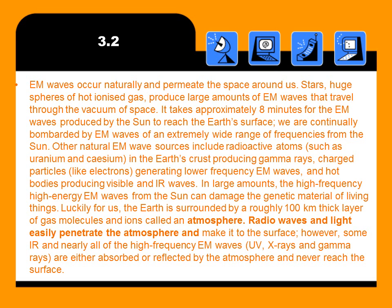The previous sentences in this slide provide background about how EM waves occur naturally and permeate the space around us — that's outside the Earth's atmosphere. It also gives an example of how long it takes for an EM wave from the Sun to reach Earth. But basically, all it wants you to discuss is that UV, X-rays, and gamma rays are either absorbed or reflected by the atmosphere, which are high frequency electromagnetic waves.